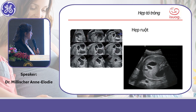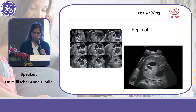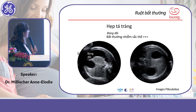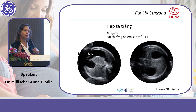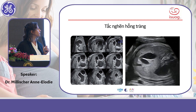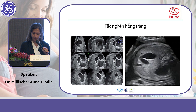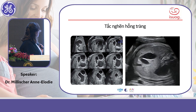Now let's move to intestinal atresias. Duodenal atresia is very commonly associated with chromosomal anomalies, particularly Down syndrome. Jejunal obstruction may not present with polyhydramnios because the fluid has already been absorbed over a long bowel segment.